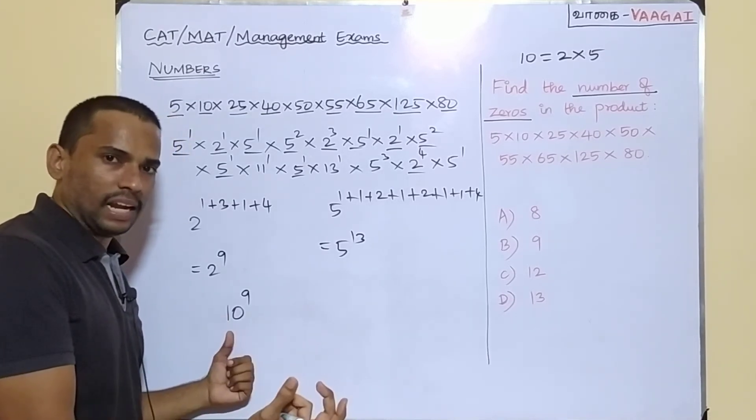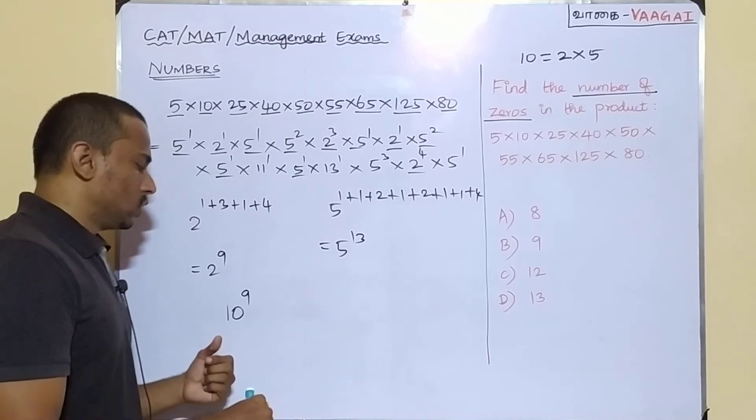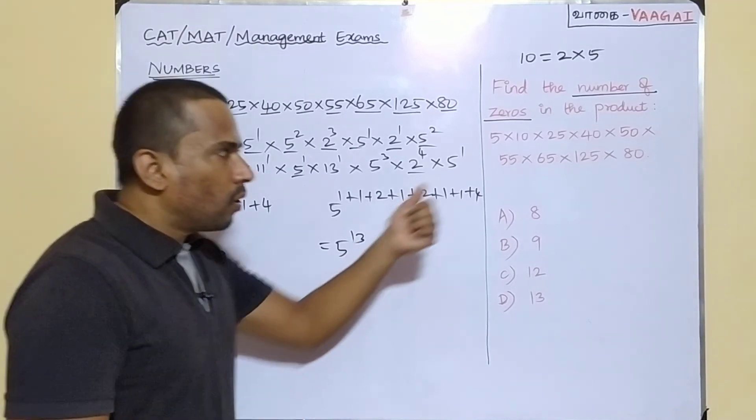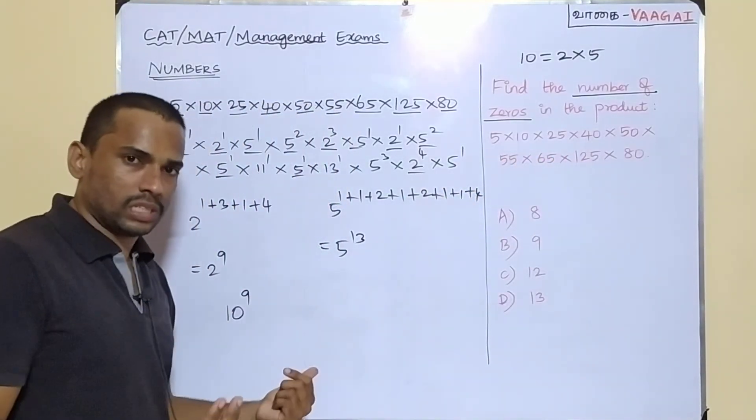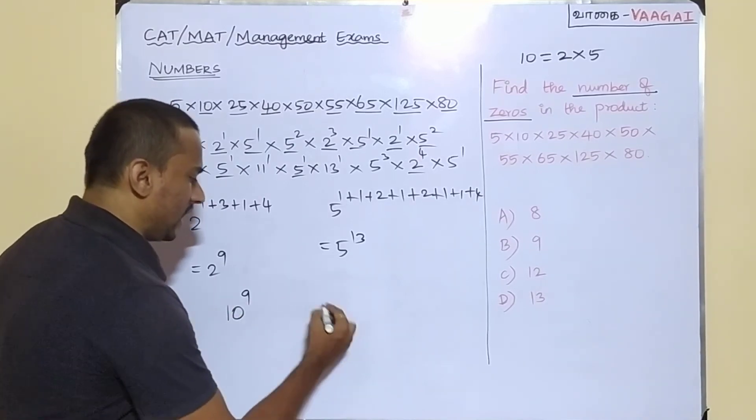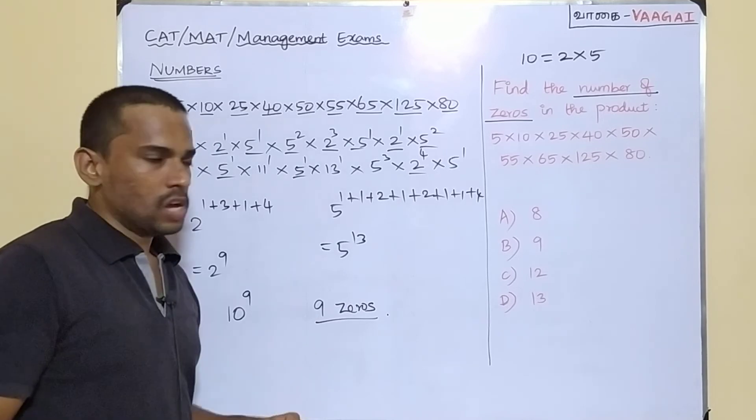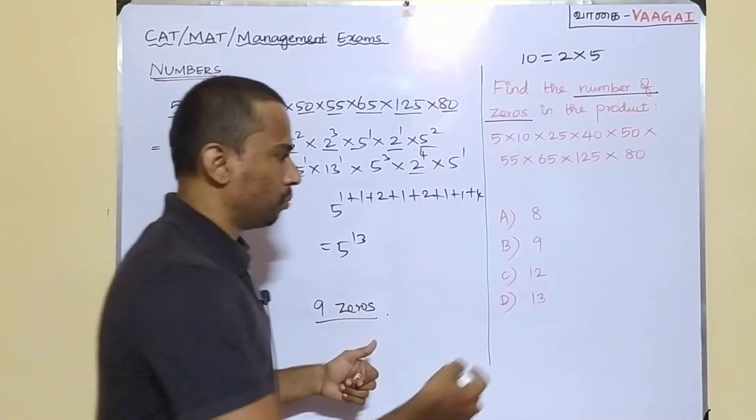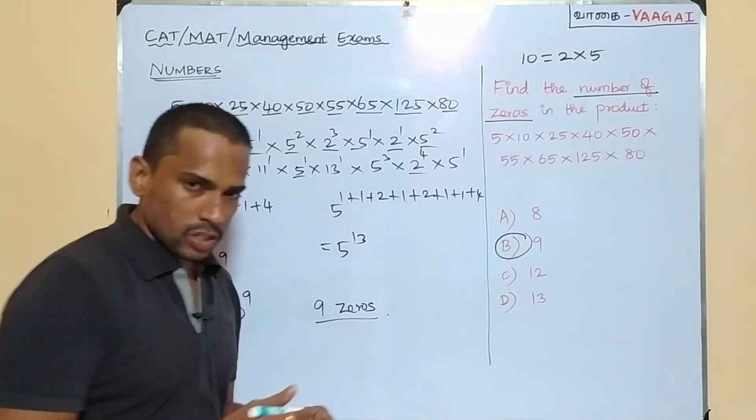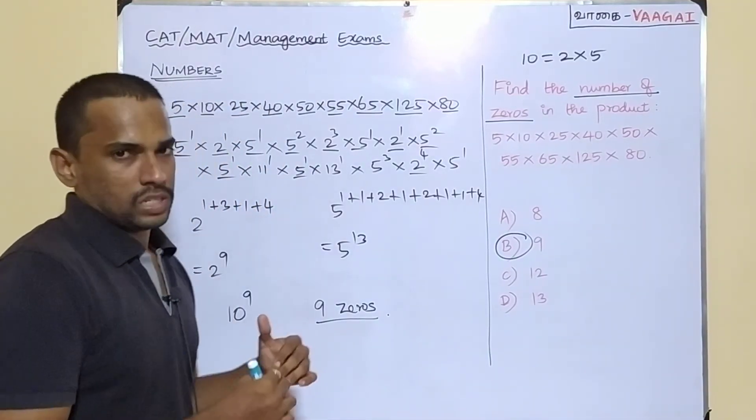So 2 power 9 with 5 power 9 alone we can combine to get a maximum of 10 power 9. So that means we can maximum collect 9 tens here, so our product will have 9 zeros at the end and that is going to be the answer. Our answer 9 is ready, available at option B. So option B, 9 is going to be the answer for this question.